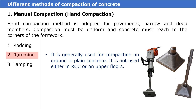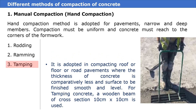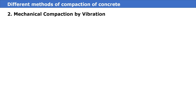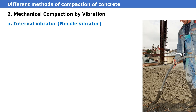Ramming is generally used for compaction on ground and plain concrete; it is not used either in RCC or on upper floors. Tamping is adopted in compacting roofs of floors or road pavements where the thickness of concrete is comparatively less and the surface is to be finished smooth and level. For tamping concrete, a wooden beam of cross section 10 cm by 10 cm is used.